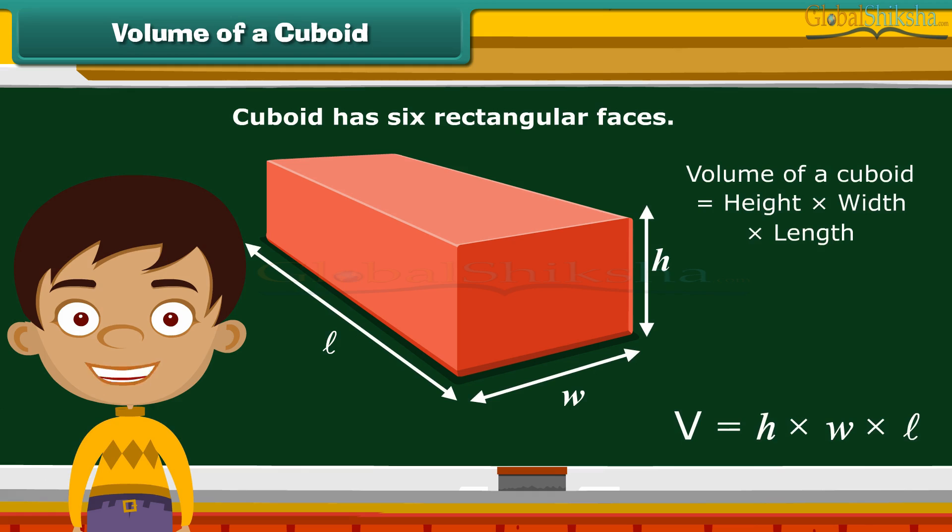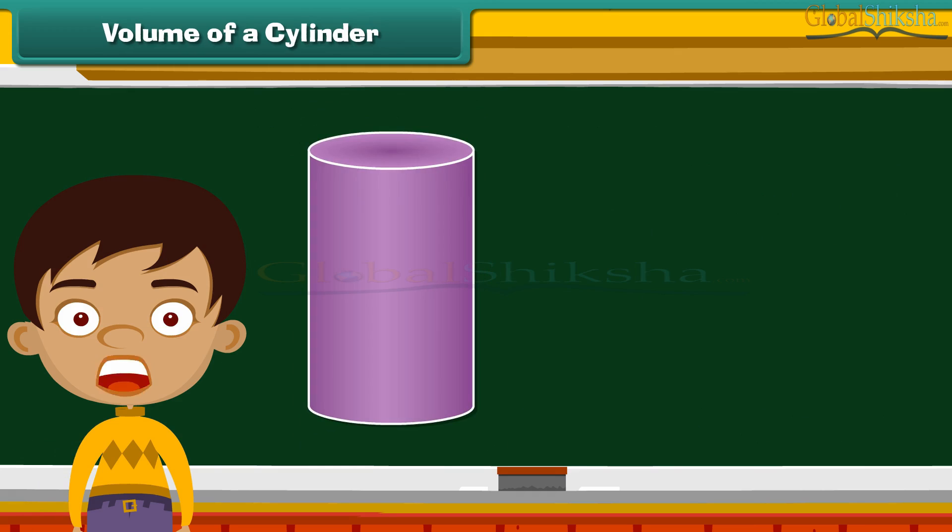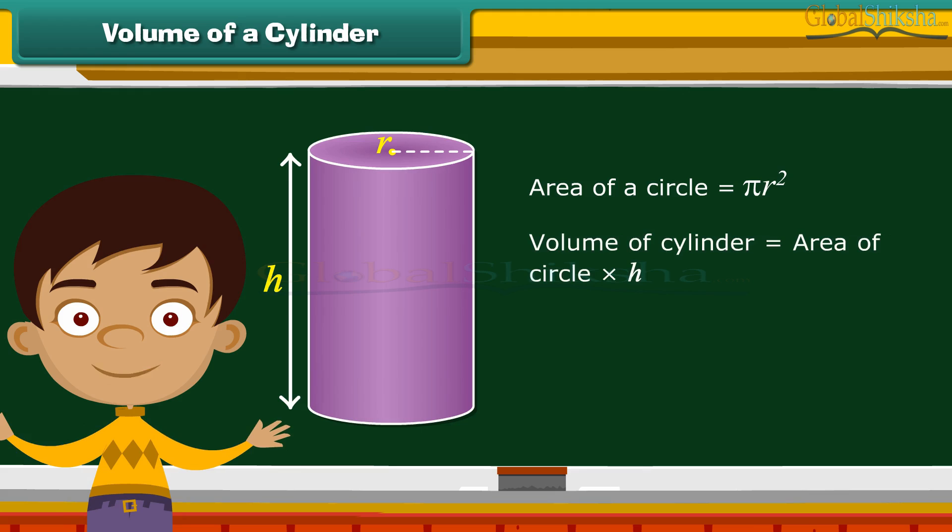A solid that has the shape of an ordinary tin can or a drum is a cylinder. The two bases of a cylinder are circular in shape. We know area of a circle is equal to pi R square. For calculating volume, we will multiply area of a circle with the height. So, the volume of a cylinder is equal to pi R square into H.